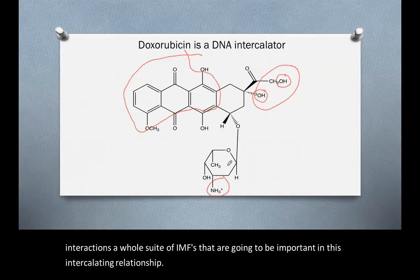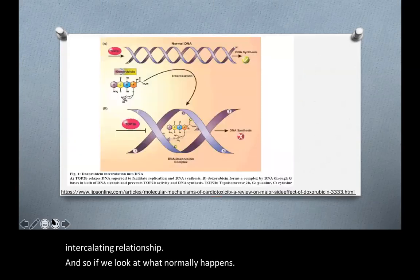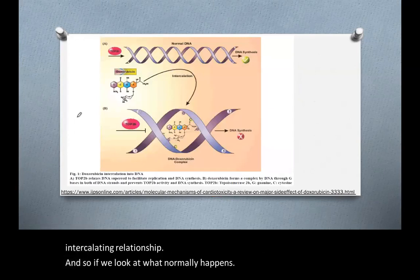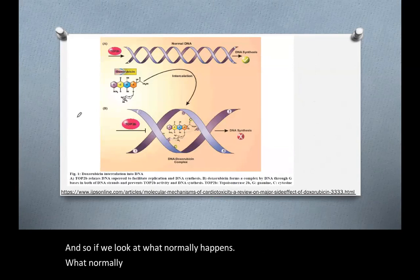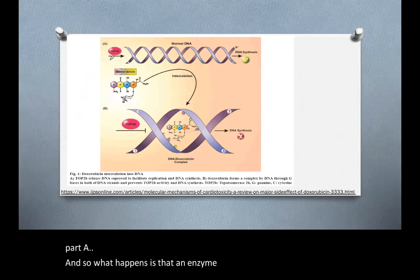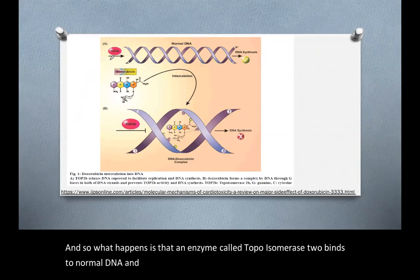And so if we look at what normally happens, what normally happens when DNA is synthesized is shown up on the top in part A. And so what happens is that an enzyme called topoisomerase 2 binds to normal DNA and it relaxes the super coil to allow replication of DNA and to allow DNA synthesis.